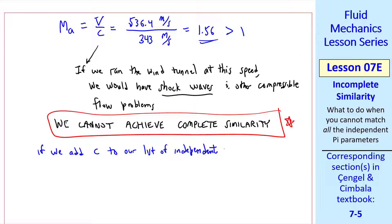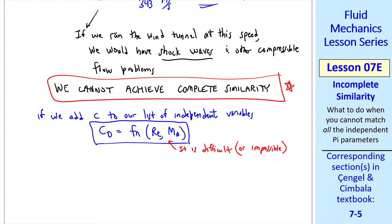So clearly we cannot achieve complete similarity. By the way, if we add speed of sound to our list of independent variables and repeat the example problem from last time, dimensional analysis would yield that CD is a function of Reynolds number and Mach number, not just Reynolds number. It is difficult or impossible to match both Reynolds number and Mach number in the same test.